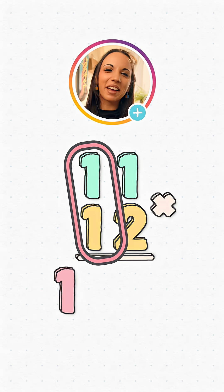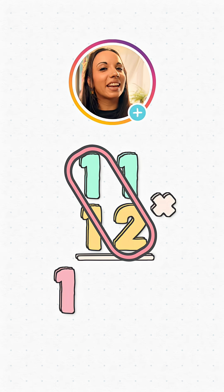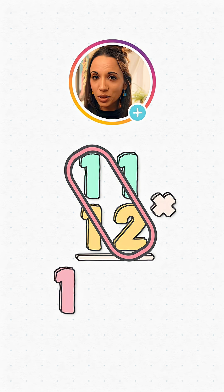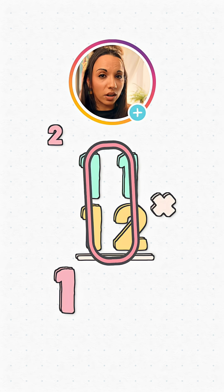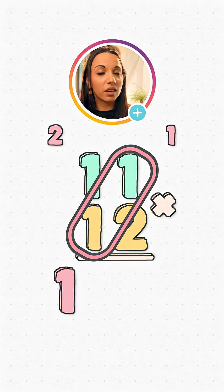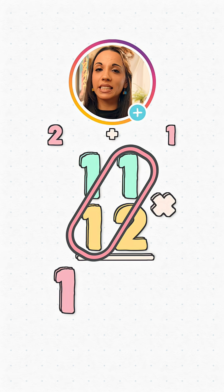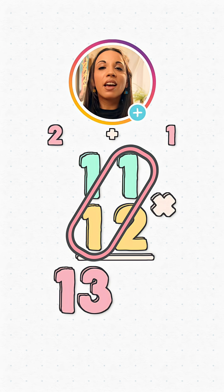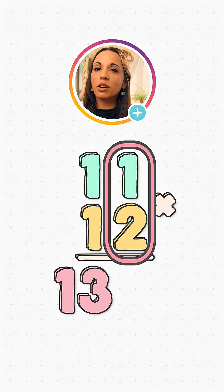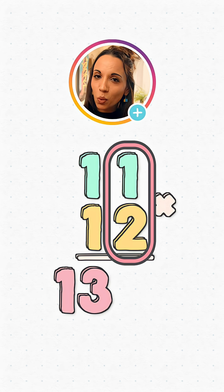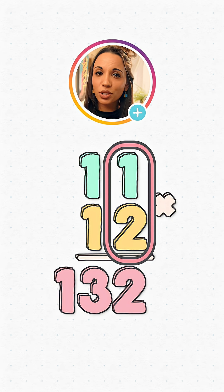Now we multiply the diagonals and add the results: 1 times 2 is 2, and 1 times 1 is 1 — we add those answers, 2 plus 1 to give 3. Finally, we multiply the units: 1 times 2 equals 2, and there's our answer — 132.